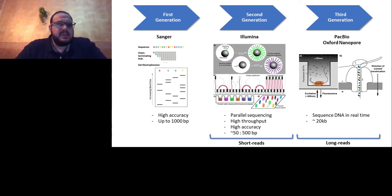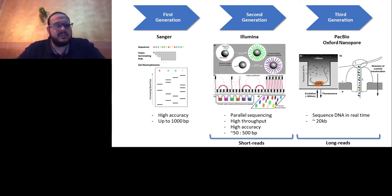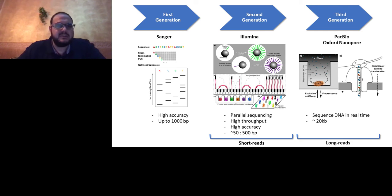Sequencing can be classified into three stages or generations. First generation, such as Sanger, was one of the pioneer sequencing tools, giving highly accurate reads reaching up to 1,000 bp. This was followed by second generation sequencing, such as Illumina, which revolutionized sequencing by performing parallel sequencing, giving high-throughput, high-accuracy data with reads ranging from 50 to 500 bp.